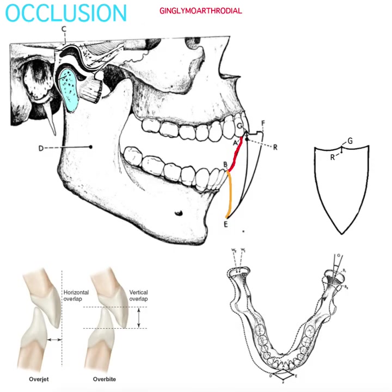If the first position represents when the mandible is most retruded, the opposite point represents when the mandible is most protruded. The point at the bottom of the diagram can be referred to as maximum opening, and the point at the top front can be referred to as maximum protrusion.